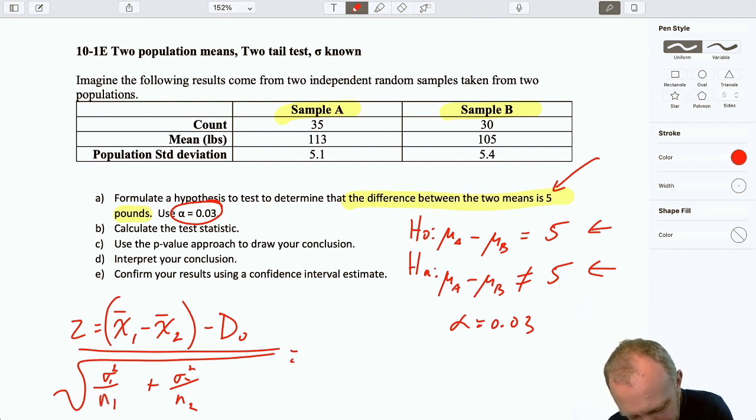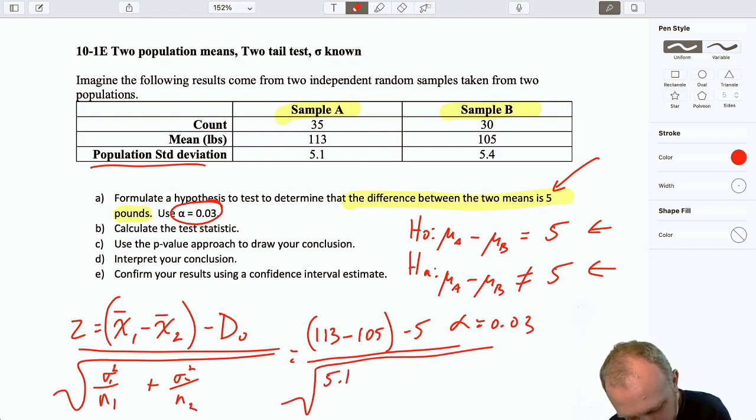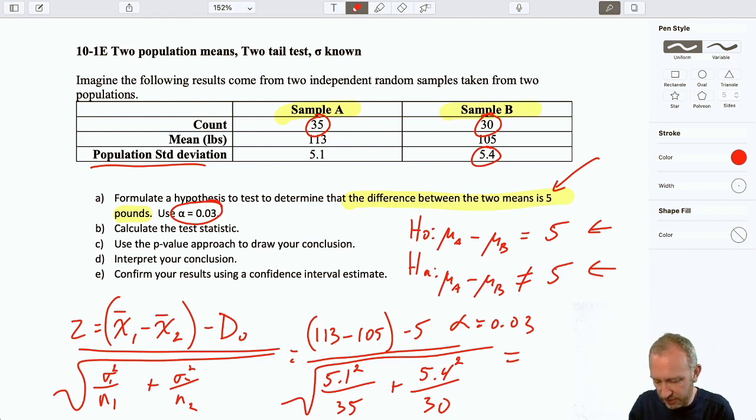And so here's my mean. I have 113 minus 105 minus the hypothesized difference is 5. And here I have our population standard deviations. So that's 5.1. And again, it's a standard deviation. So I have to remember to square it. Divided by my sample sizes. There's 5.4 squared. Divided by that sample size, 30. So this gives me, let's see what I have. 113 minus 105 minus 5. Divided by 5.1 squared over 35. Plus 5.4 squared over 30. And so here I have my test statistic, 2.29.